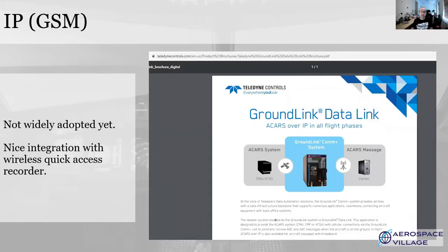There is an early test of using cellular networks to provide ACARS services in Europe. This uses a piece of equipment found on many aircraft already — a wireless quick access recorder or wireless digital flight data acquisition unit. These devices capture lots of data in flight and then relay it back to the airline once on the ground over a 3G network. The same unit can be upgraded to provide a wireless link and route ACARS over that connection.